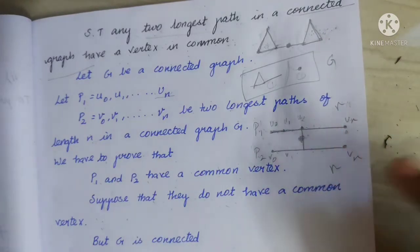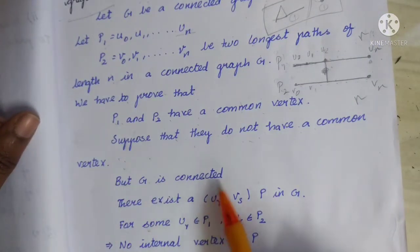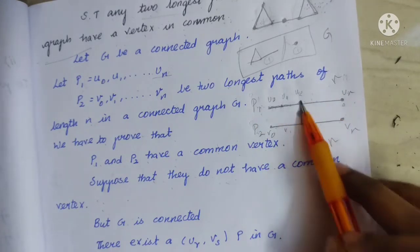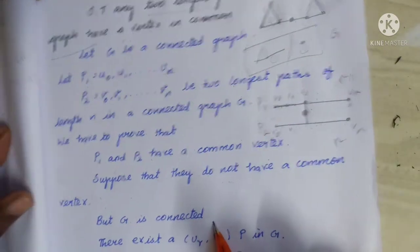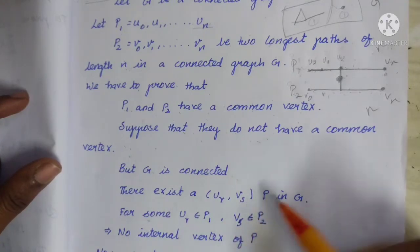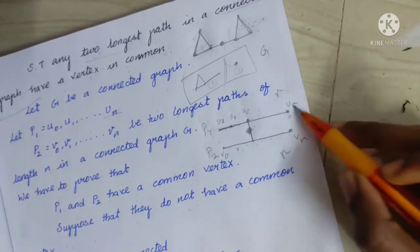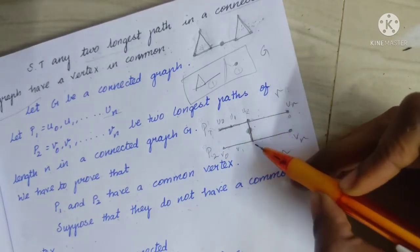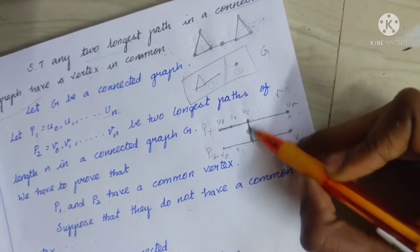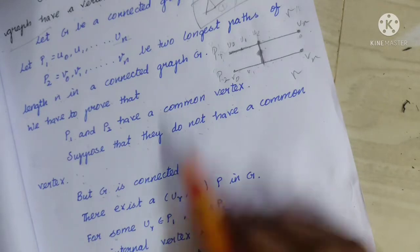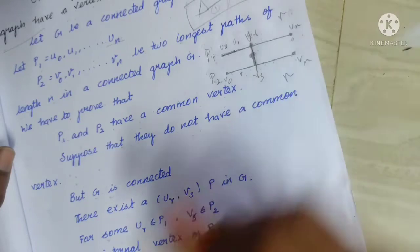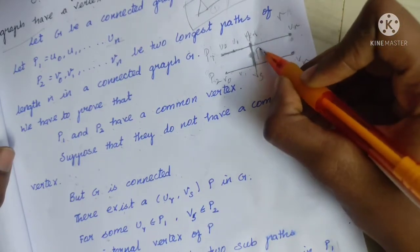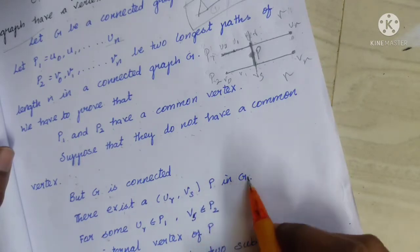Suppose that they do not have a vertex in common. But G is connected. This graph is connected. But G is connected, so there exists vertices Ur in P1 and Vs in P2, and a path P in G from Ur to Vs.